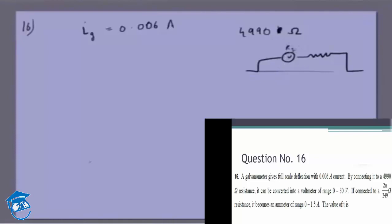This has its own resistance, let's call it R_g, which is 4990. The voltmeter has a range of 0 to 30 volt and this is a full scale deflection at 0.006 amperes.